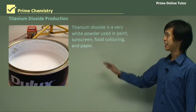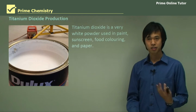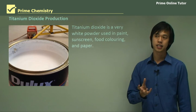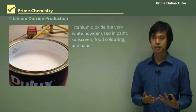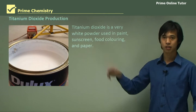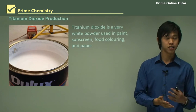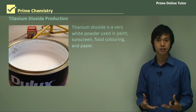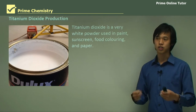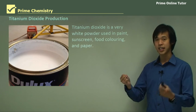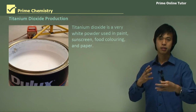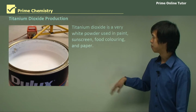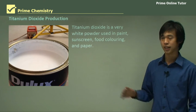On the topic of sunscreen, titanium dioxide is a very white powder that reflects UV radiation and is used in sunscreen as an alternative to zinc oxide. It's also used in paint and plastics to help stabilize them against UV conditions — preventing breakdown. Titanium dioxide is also used in food colorings and certain papers, mostly as a whitening or UV-stabilizing agent. It can be refined from ilmenite using sulfuric acid.